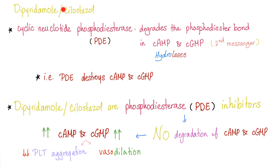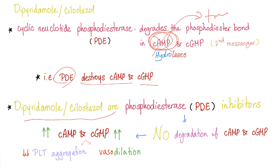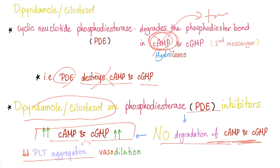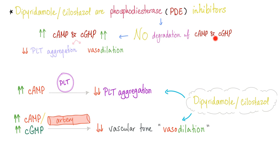Dipyridamol and cilostazol are two drugs but share the same mechanism of action. Cyclic nucleotide phosphodiesterase degrades the phosphodiester bond in cyclic AMP and cyclic GMP — it hydrolyzes them. Phosphodiesterase inhibitors block this enzyme, so nothing destroys cyclic AMP or cyclic GMP. The result: increased cyclic AMP and cyclic GMP leads to decreased platelet aggregation as well as vasodilation.